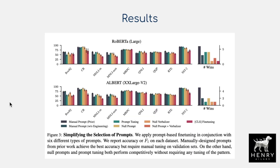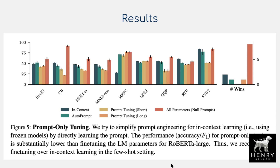Here are some results. The key finding is that null prompts perform as well as other strategies like prompt tuning and manual prompt design — not significantly better, but requiring way less effort. The yellow bars for null prompts perform about the same as manual prompts from pattern exploiting training. Strategies like in-context learning, AutoPrompt, and both short and longer prompt tuning via gradient descent all significantly underperform the null prompting strategy.